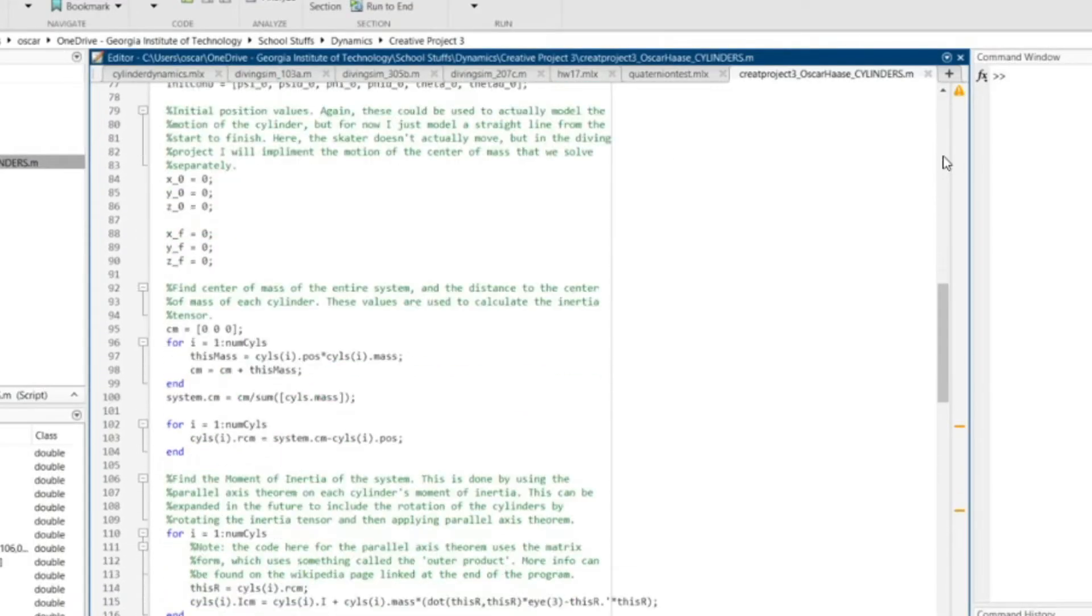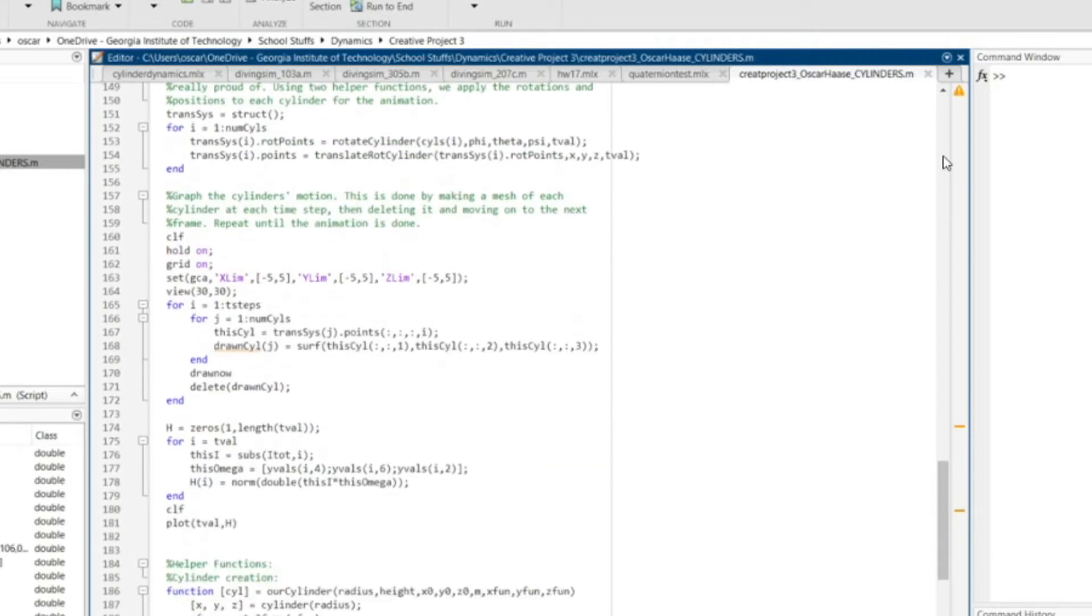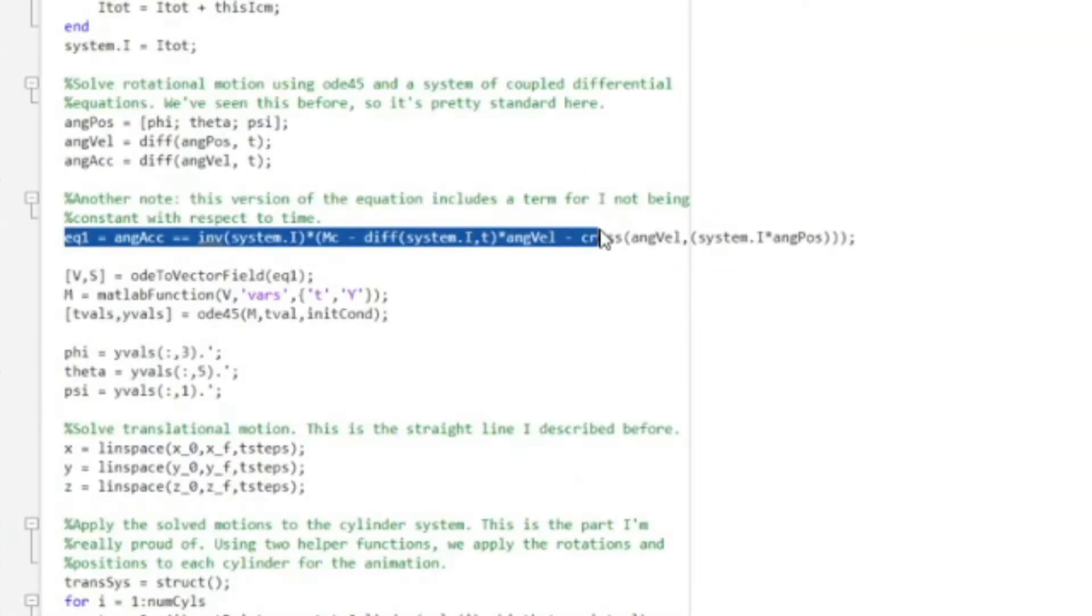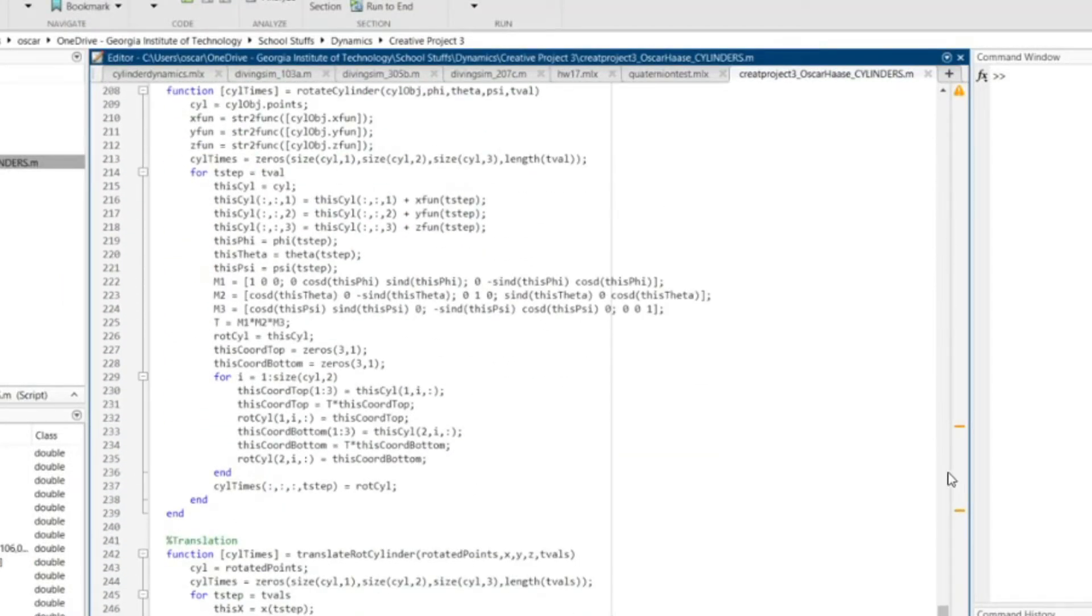All right, so in our previous assignment, I did this really cool simulation in MATLAB. Using all the stuff we learned in class - rotation matrices, moments of inertia, equations of motion - I was able to make a program that would simulate cylinders and their motion based on just some initial parameters.